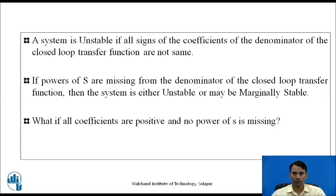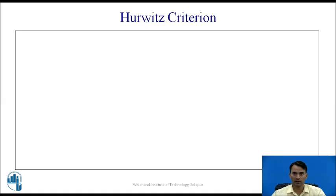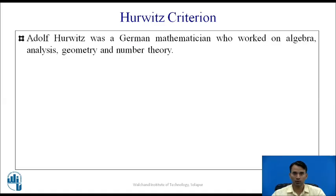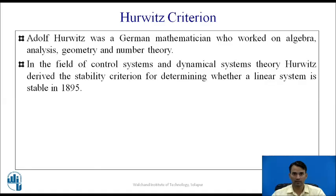But what if all coefficients are positive and no power of s is missing — then how do we find out whether the system is stable or not? For that we have Hurwitz Criteria. Adolf Hurwitz was a German mathematician who worked on algebra, analysis, geometry, and number theory. In the field of control systems and dynamical system theory, Hurwitz derived the stability criteria for determining whether a system is stable, in 1895.